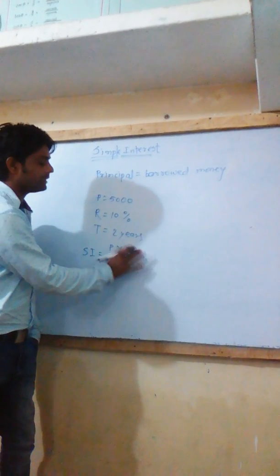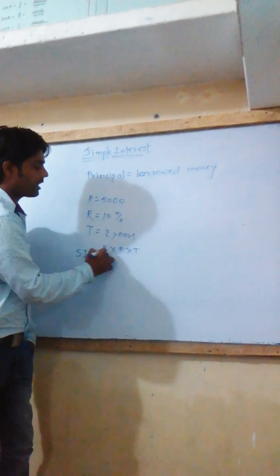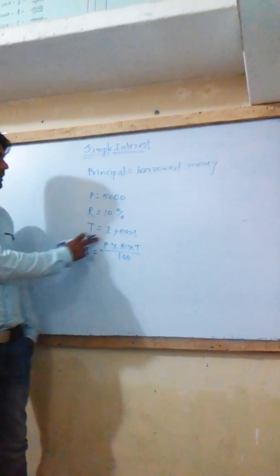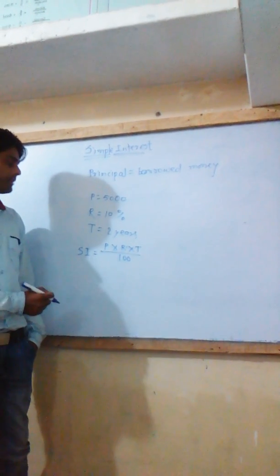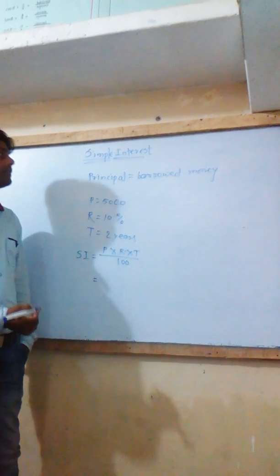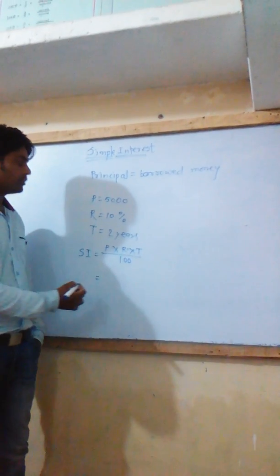P multiplied by R multiplied by T upon 100, where P is principal, R is rate of interest, and T is time. Time means the duration for which I have borrowed the money.